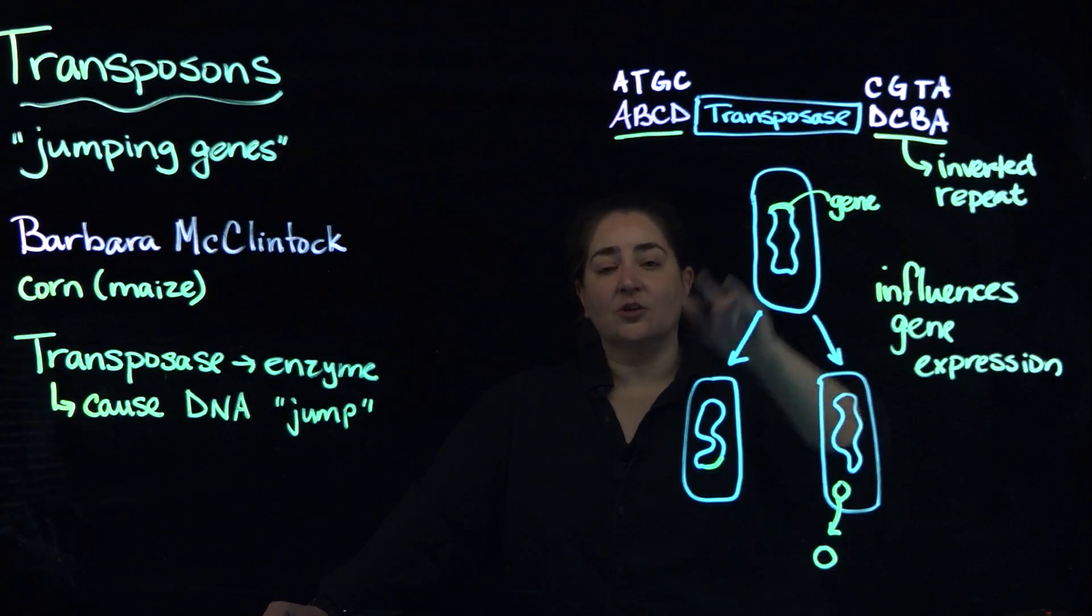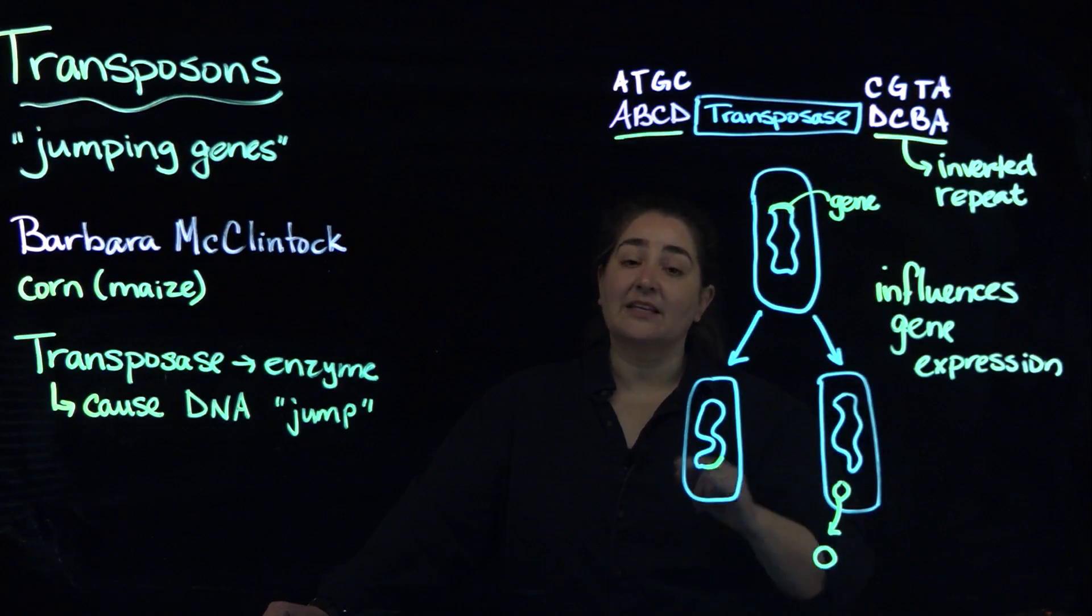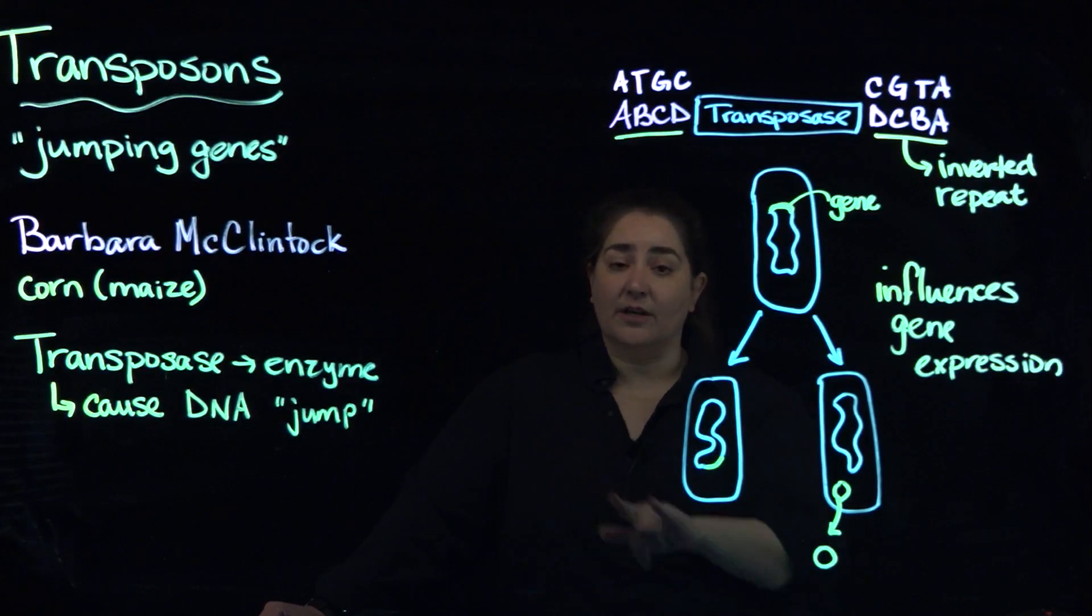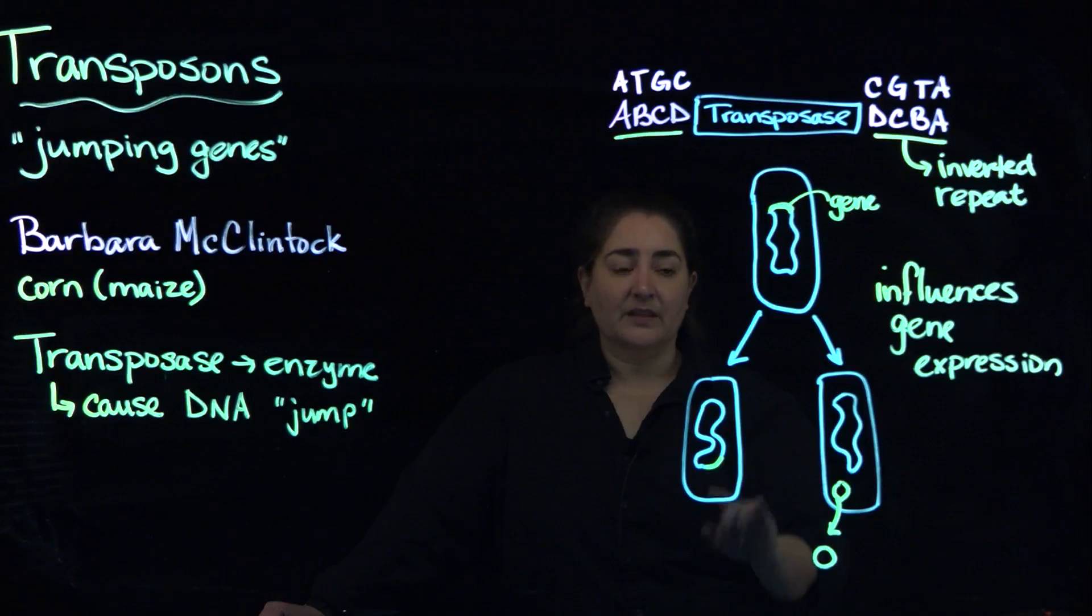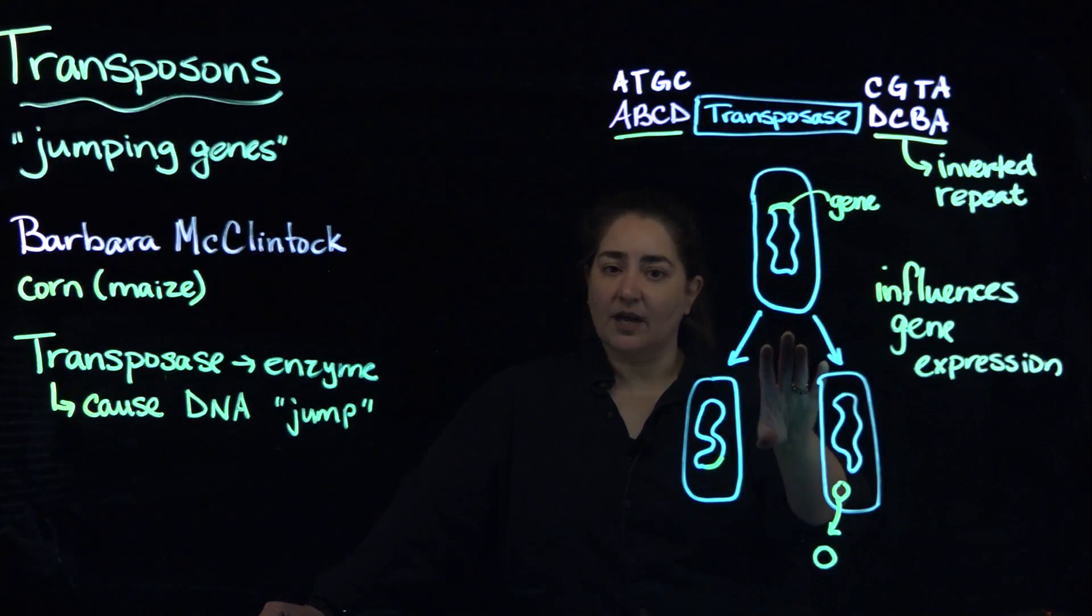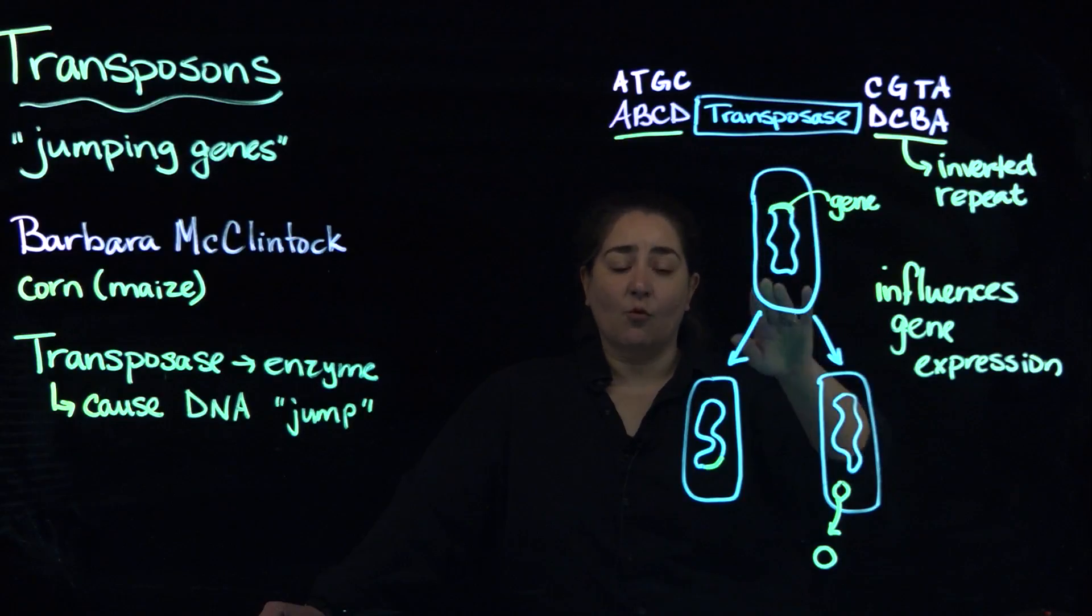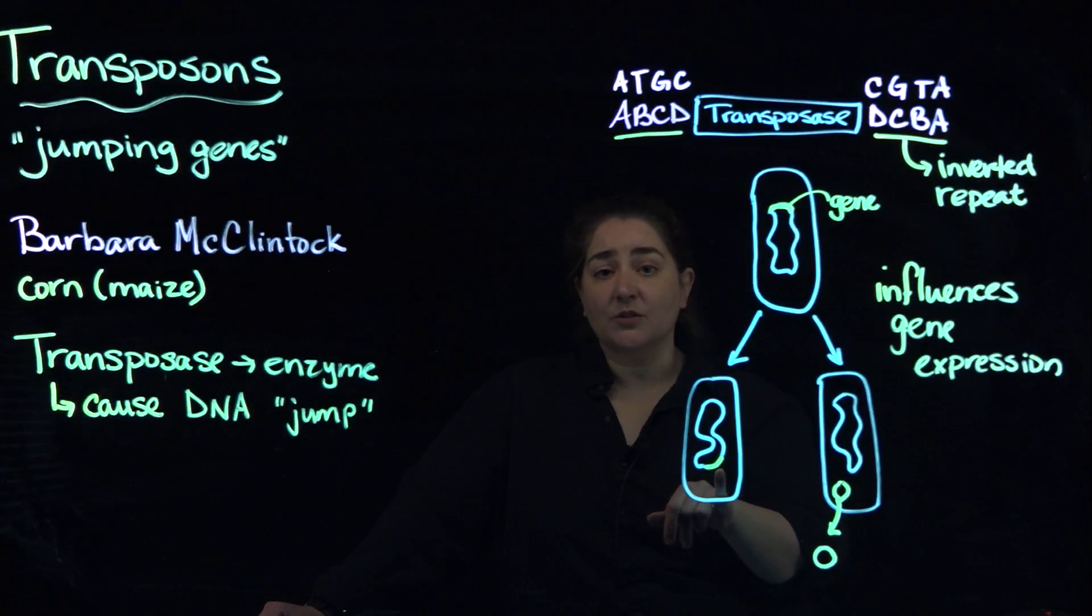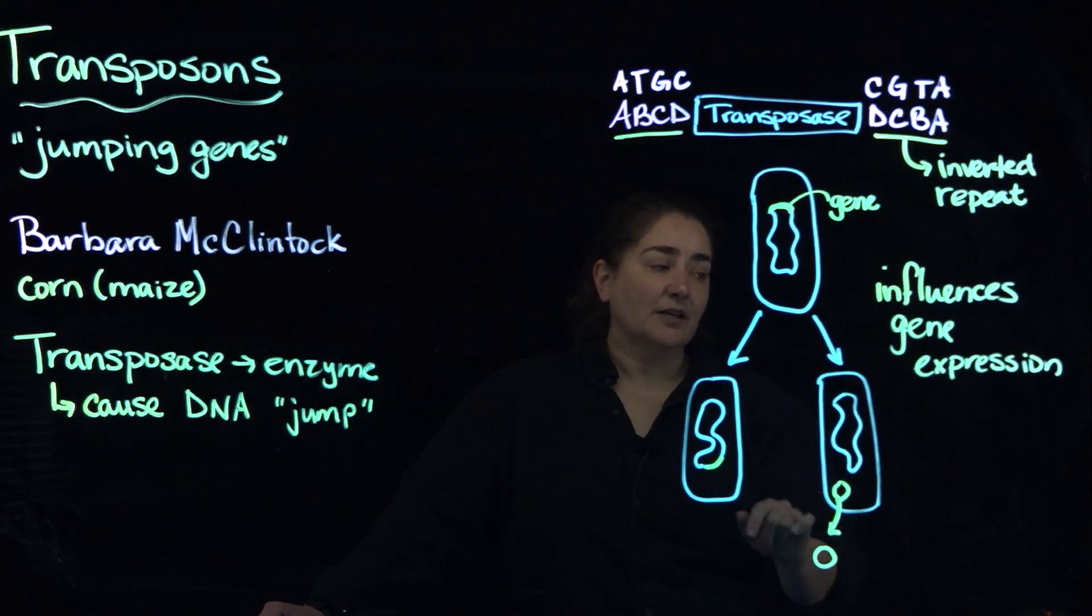So it changes the location of the gene. So in the case of organisms that have multiple chromosomes, it might move a gene from chromosome 1 to chromosome 4. Now with bacterial cells, you don't have multiple chromosomes. You've got one chromosome, but you can still move things around within that one chromosome. Alternatively, what can happen?